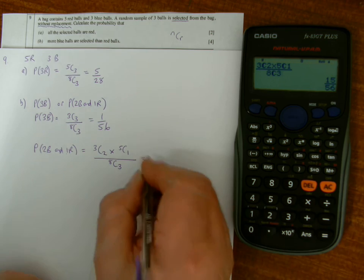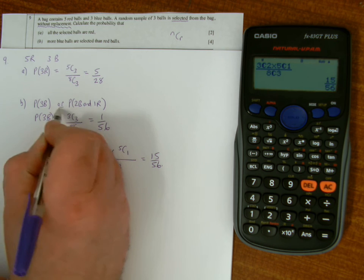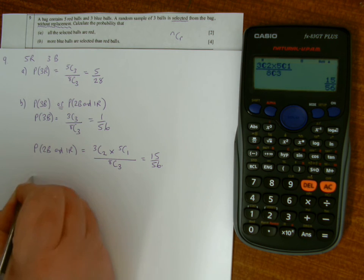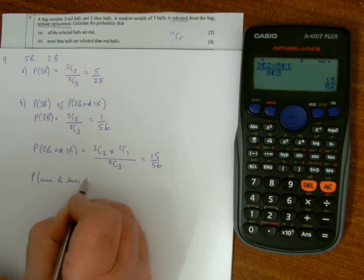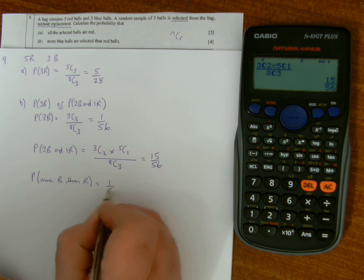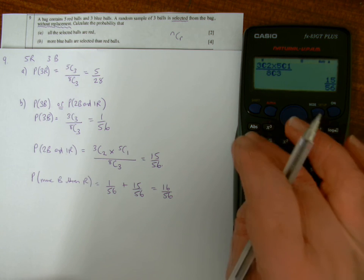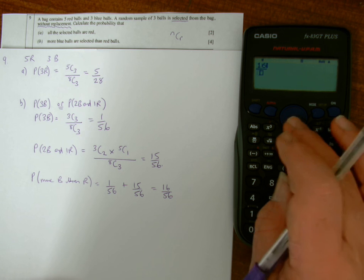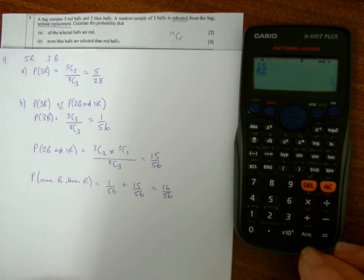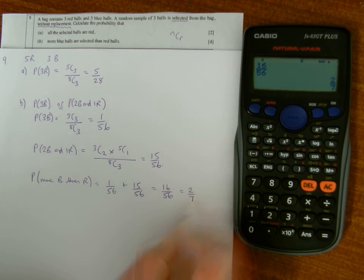So there's the two separate calculations, and then because I've got an 'or' to link them, I add them together. So the probability of more blue than red is one over 56 plus 15 over 56. If I want to check that's in the lowest form, I just simply type in the fraction on the fraction button. If I press equals, it'll give me the simplest answer, which is two sevenths.